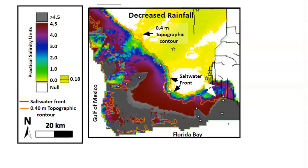Notice that the saltwater front closely hugs the 0.4 meter contour, except where it bows inland in response to the eastern canals. And salinity steeply increases well above 3 PSU close to the saltwater front. So what difference would it make if we had the same amount of warming, evapotranspiration, and sea level rise, but increased rainfall? Once again, I want you to watch the saltwater front.